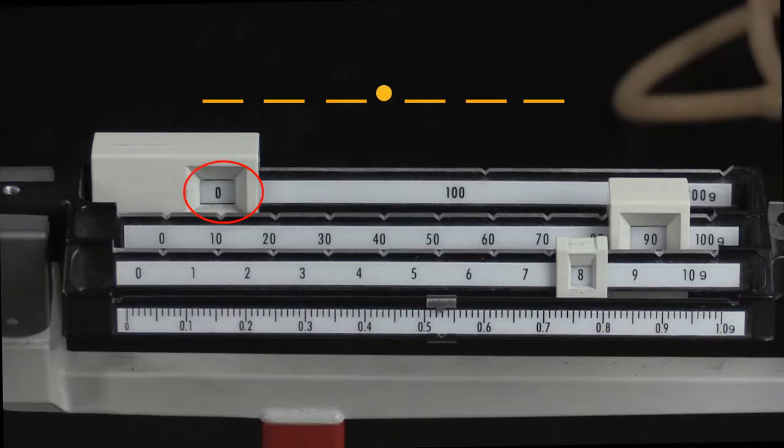Read from the largest place value to the smallest. In this case, notice that the slider indicating the hundreds place is in the zero slot. So there is a zero in the hundreds place. Next we move to the tens place. The slider is in the 90 slot, so there is a nine in the tens place.